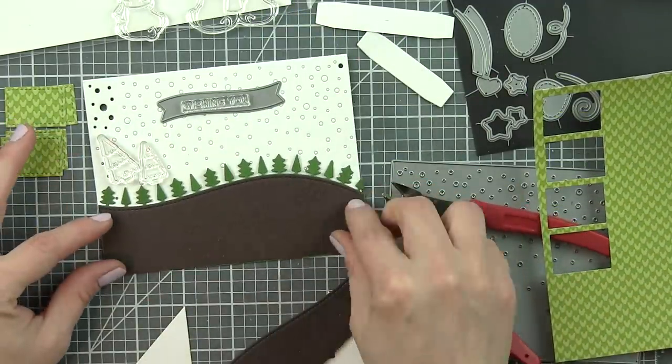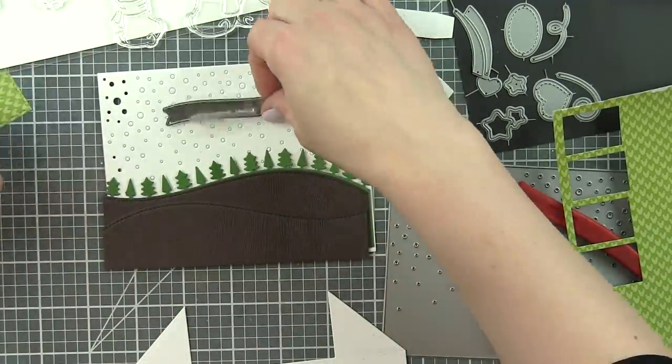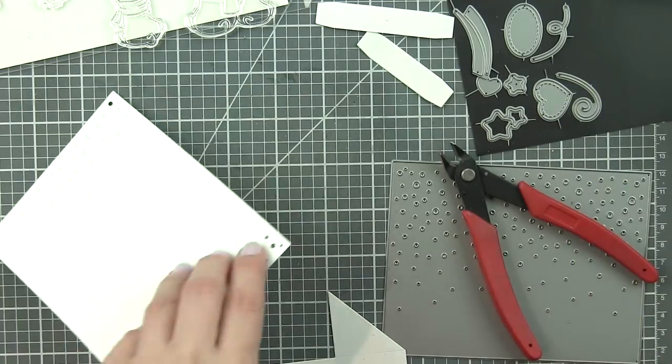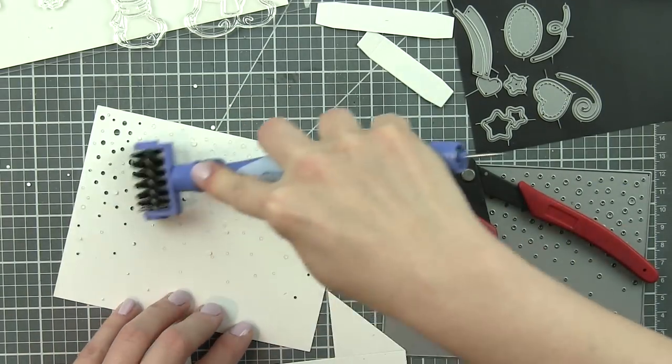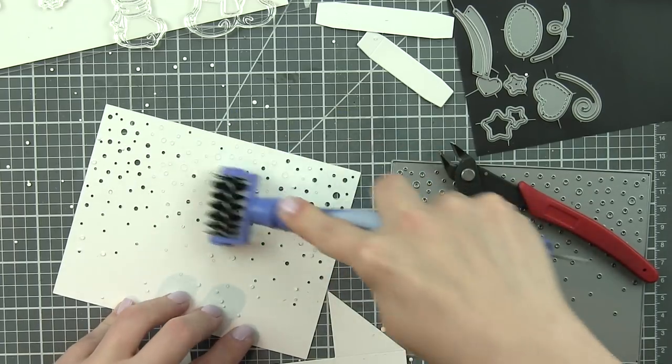Then I've used some of the new woodgrain neutrals cardstock with the stitched hillside borders, and I've die cut two of those, and I die cut a forest border from some noble fur cardstock.